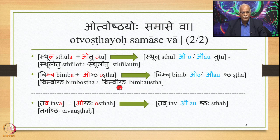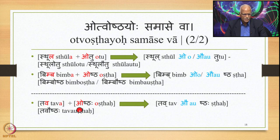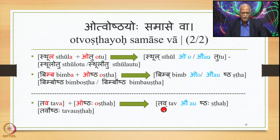But when it is not a compound — for example, Tava plus Oshtha, where Tava is the Shasthi Ekavachana of Yashmad and Oshtha is the Prathama Ekavachana of Oshtha — even though A is followed by O, there is no Pararupa Sandhi here. In fact, Vriddhi Sandhi takes place: in place of A and O, Vriddhi (Au) is substituted, giving Tava + Au + shthaha = Tavaushtaha.